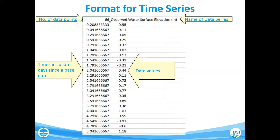The first format is the time series format — a text file, shown here copied into Excel. There is a header where the first number is the number of data points and the next is the name of the data series. There are two columns: one for time and one for data values. Time is normally in Julian days since the model base date, but it also accepts a calendar date format. You can prepare this in Excel and then export or copy the data to a text file.